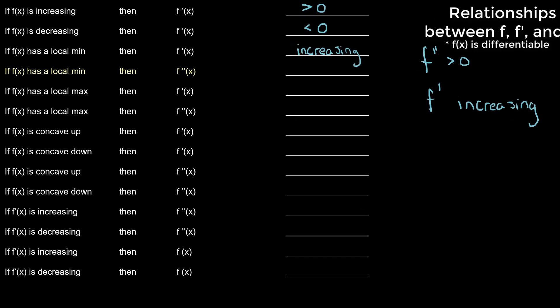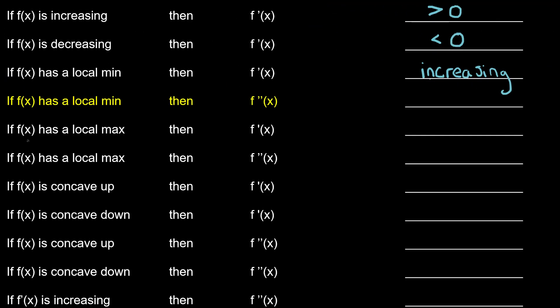Very similar to what's coming up: if f of x has a local minimum, then its second derivative — it's concave up at this point, which means that its second derivative is positive.